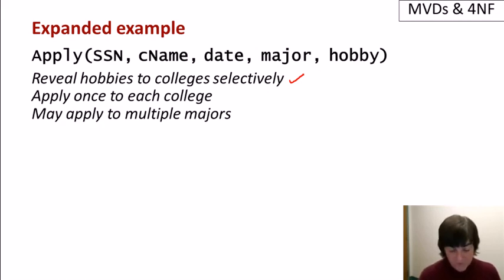Secondly, let's assume that we restrict students to apply only once to each college. But what I mean by that is just on one day. A student can still apply to multiple majors at a single college and two different majors at different colleges. Let's also assume that majors are independent of hobbies, which seems to make sense.